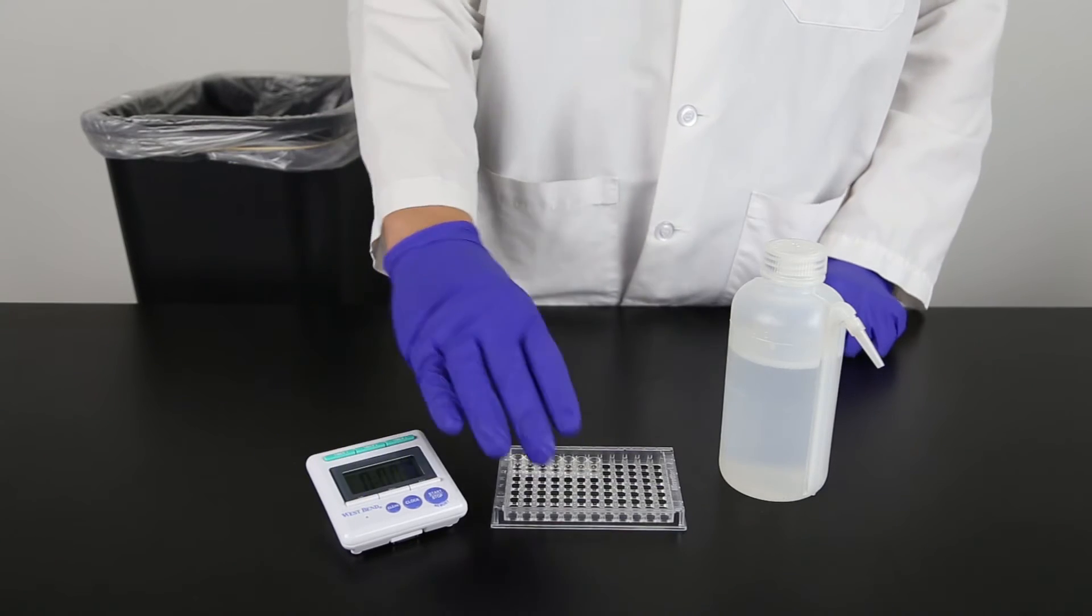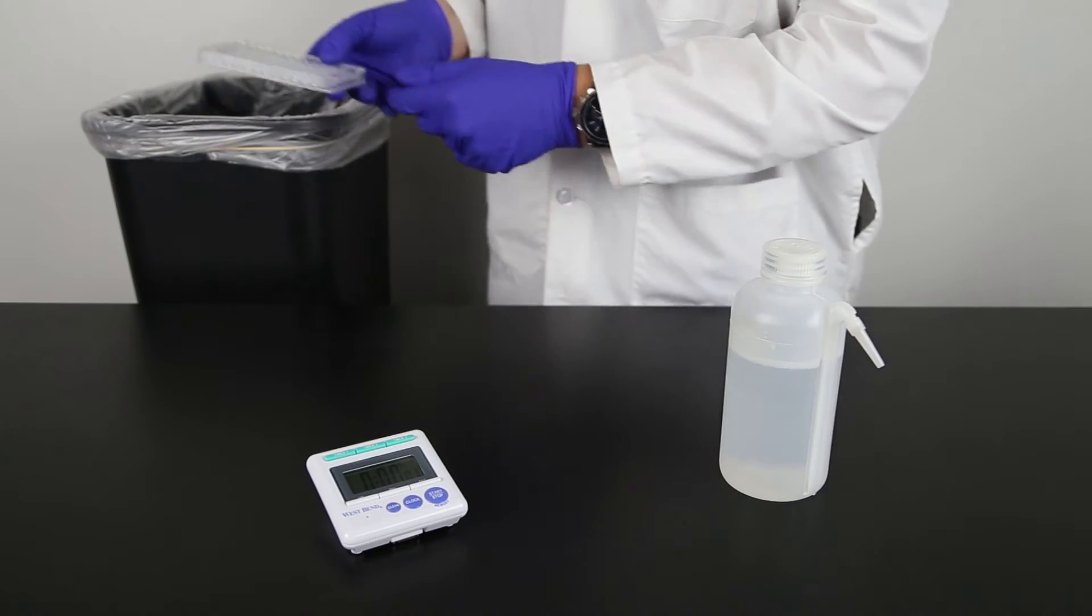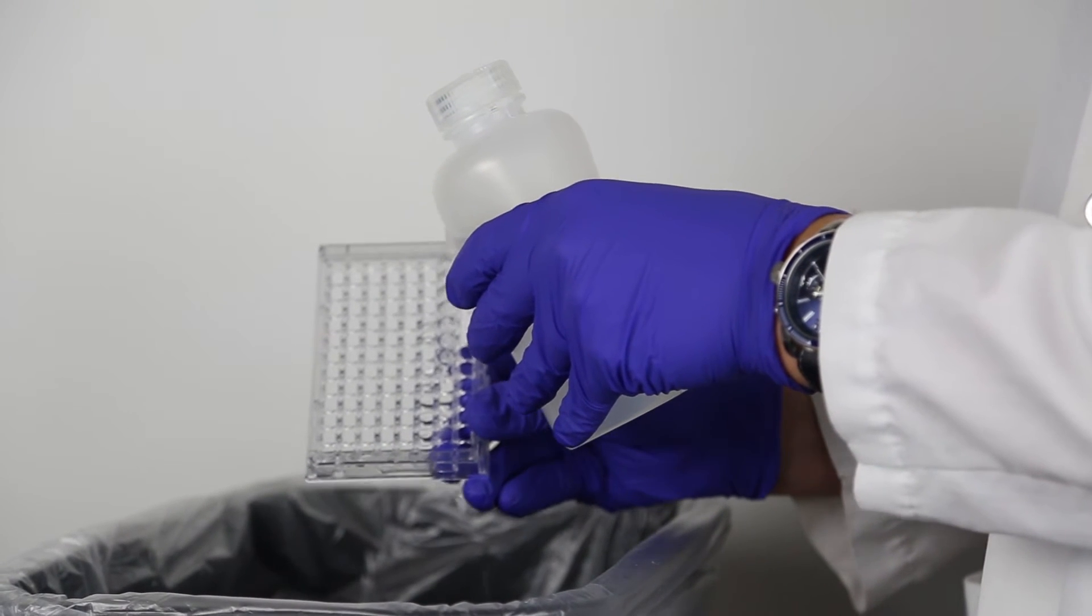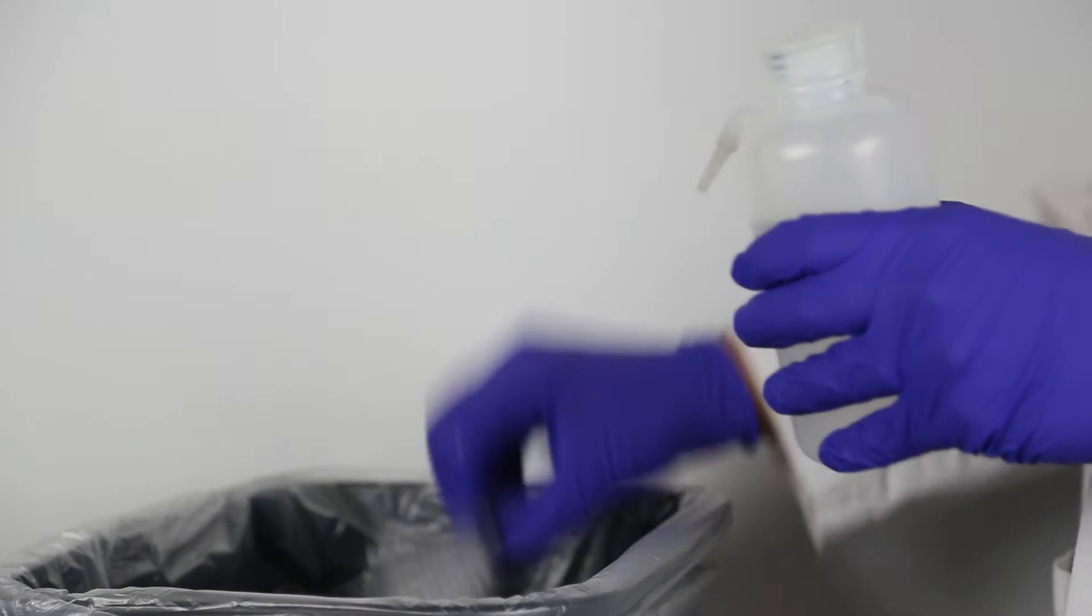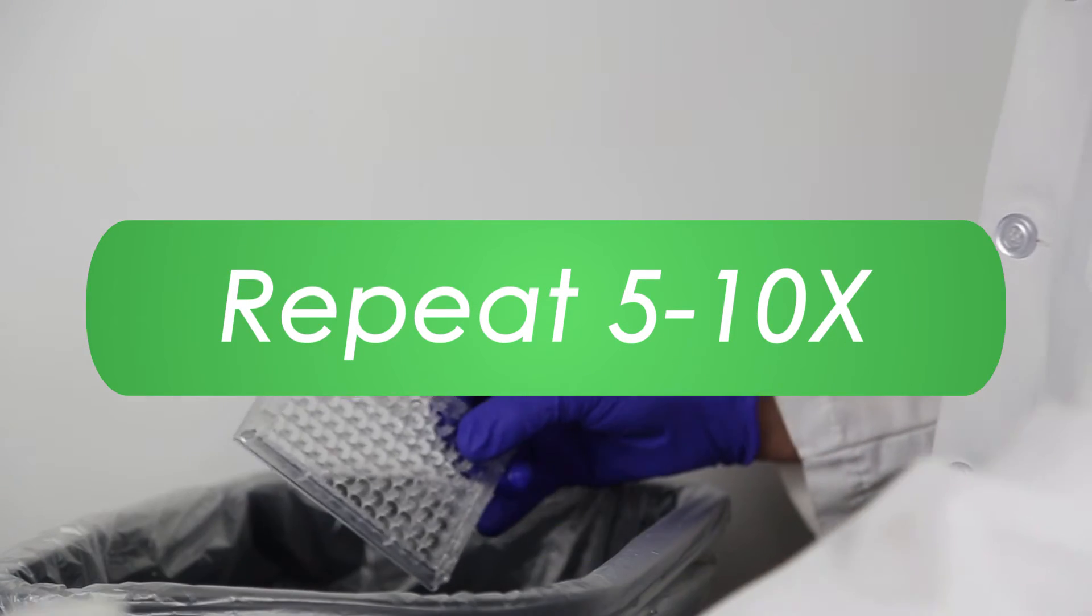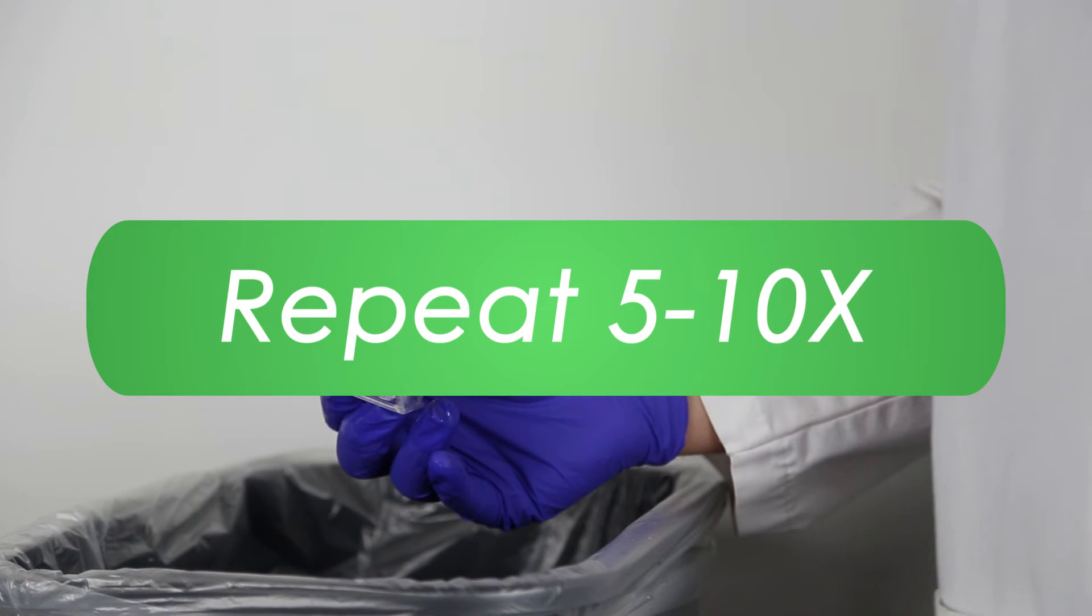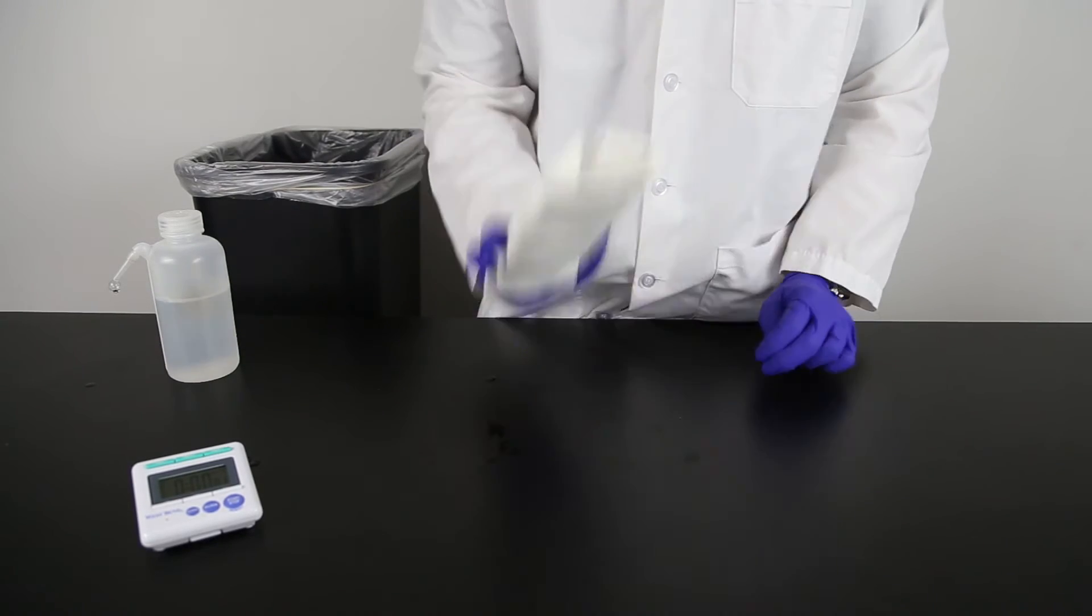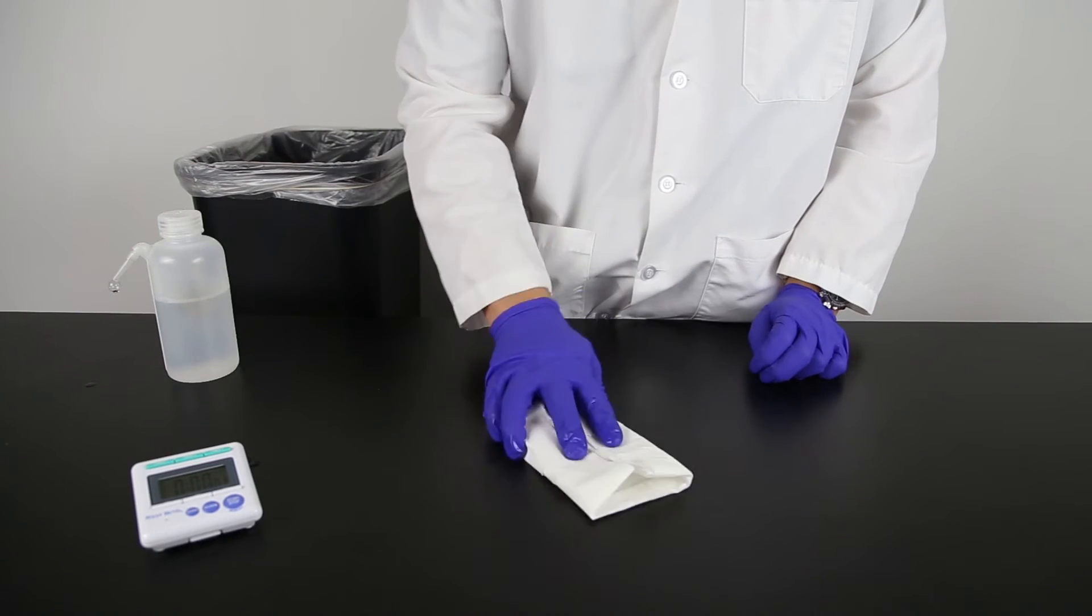After the 10-minute incubation, empty the well's contents into a waste receptacle or sink. Fill each antibody well with the wash buffer solution and dump out. Repeat the washing 5 to 10 times depending on the assay. Then turn the wells upside down and tap out on a paper towel until remaining wash solution is gone.